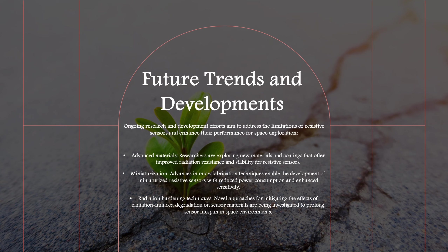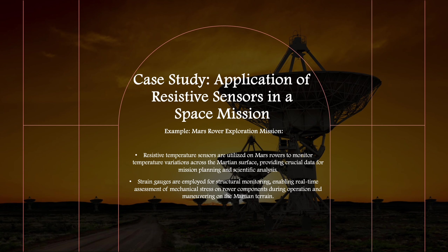Now we will discuss a case study describing the applications of resistive sensors in a space mission. In the Mars rover exploration mission, resistive temperature sensors are utilized to monitor temperature variations across the Martian surface, providing crucial data for mission planning and scientific analysis. Additionally, strain gauges are deployed for structural monitoring, enabling real-time assessment of mechanical stress on rover components during operation and maneuvering on the Martian terrain.